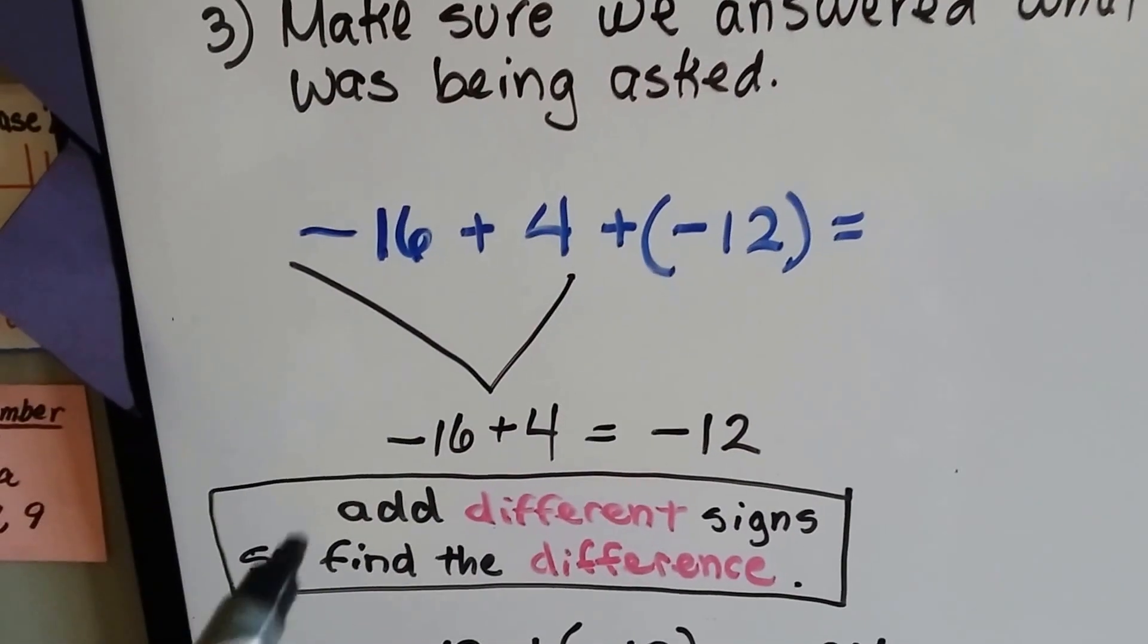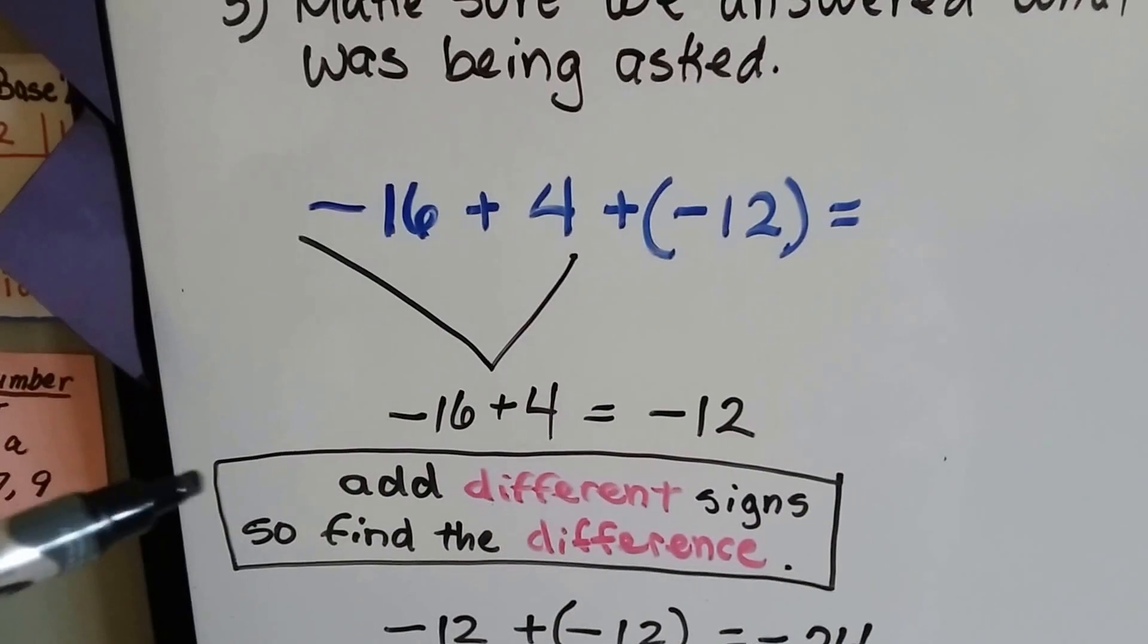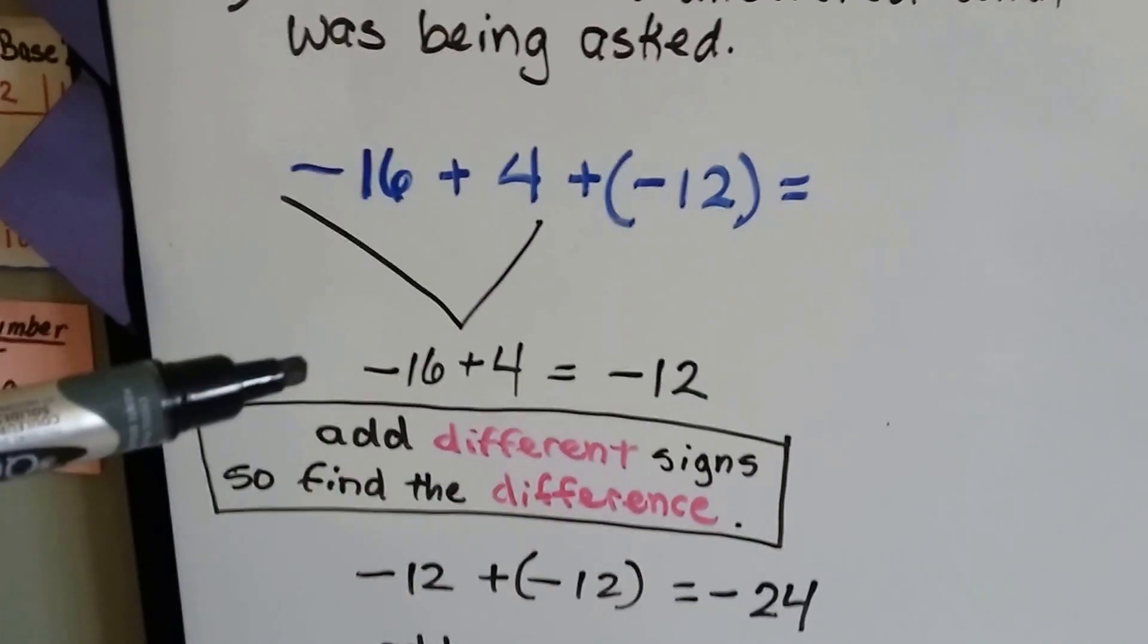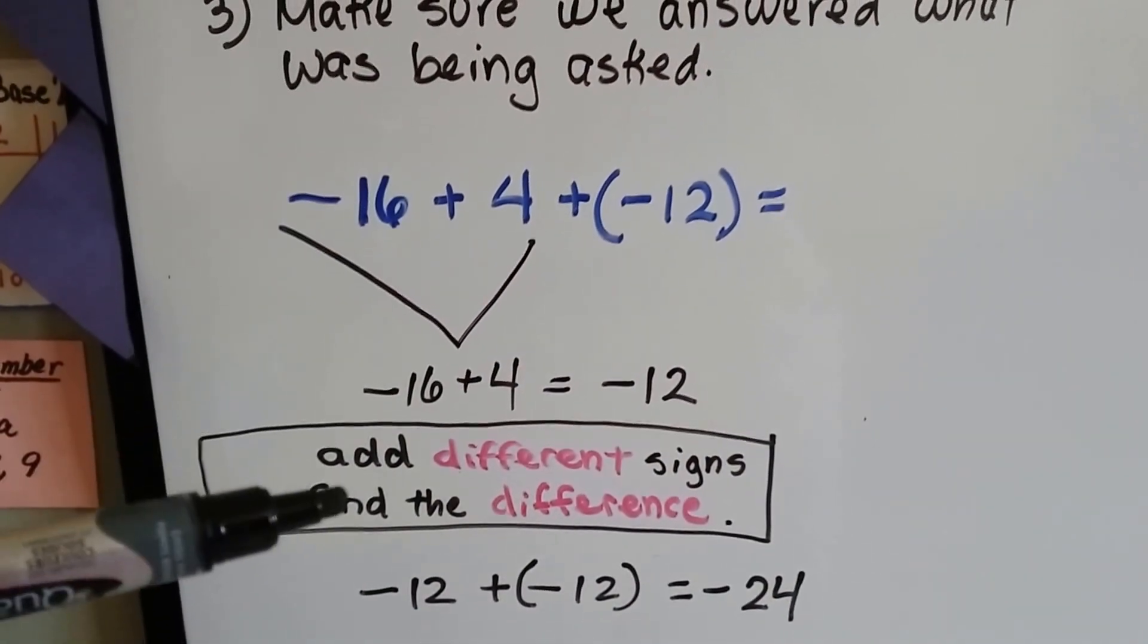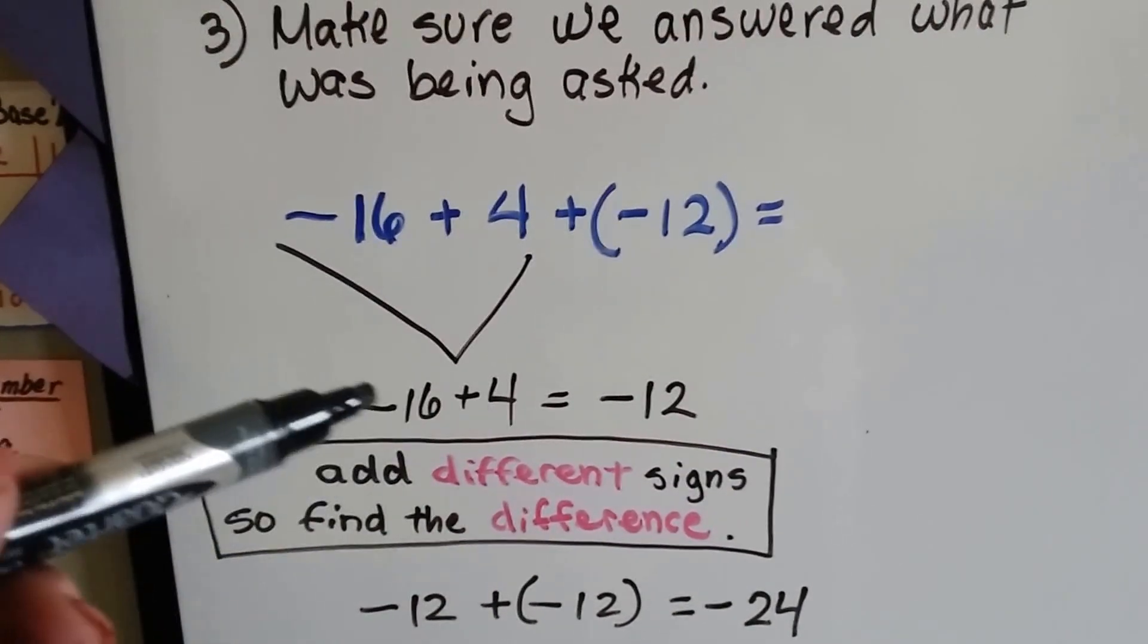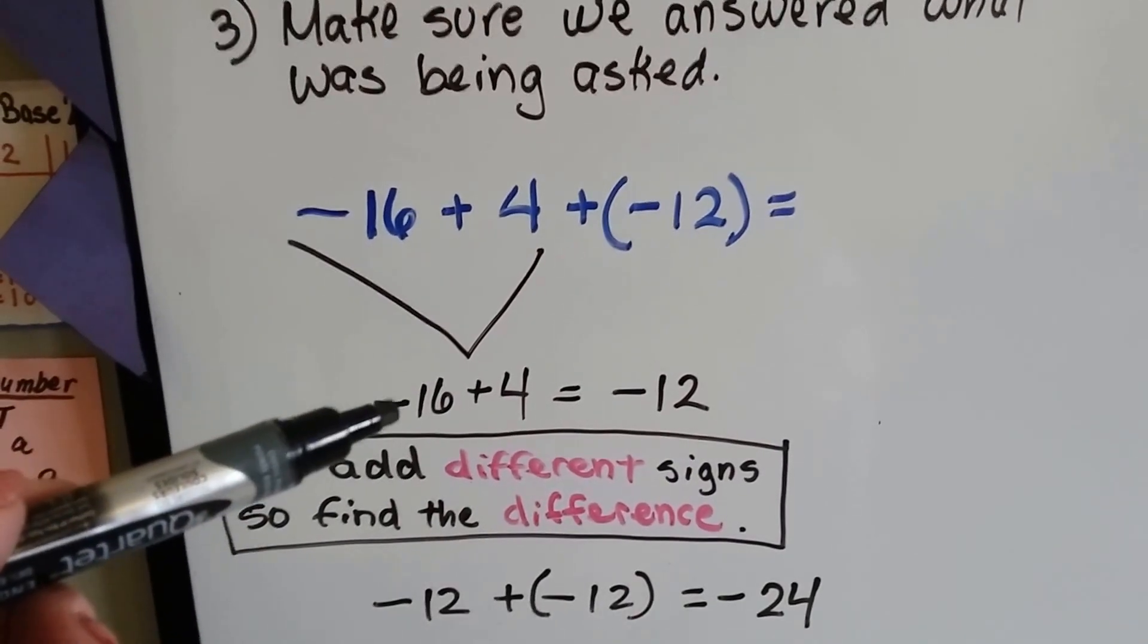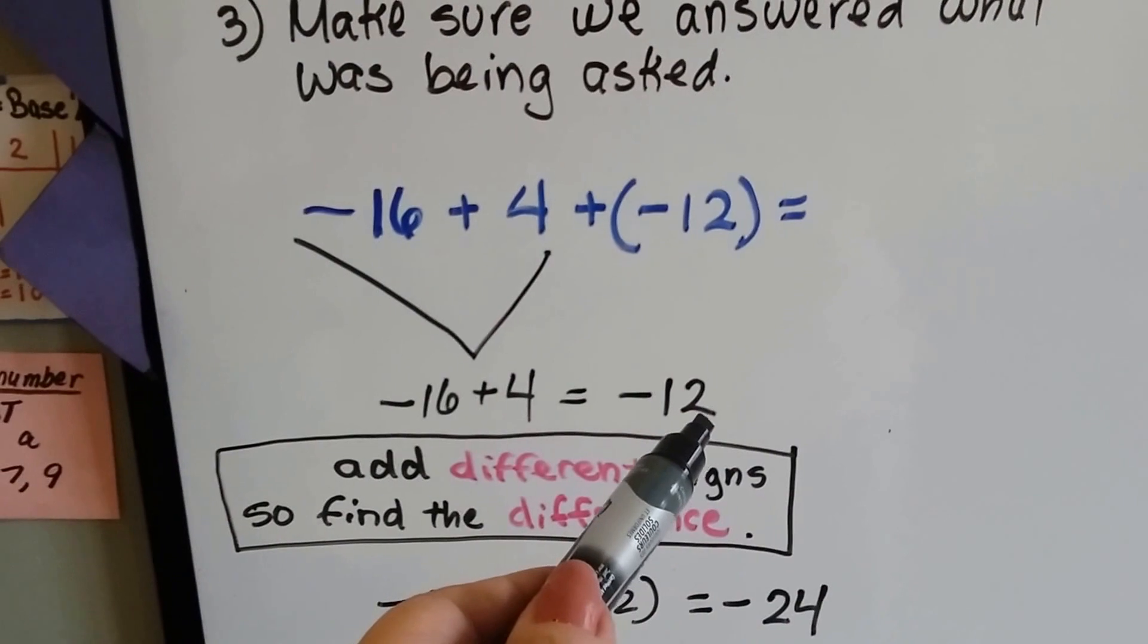I'm going to follow our rules. We have a negative 16 and a positive 4, and remember what the rule is? We add different signs, so we find the difference. So because this is a negative and that's a positive, and we're adding, and the signs are different, we're going to find the difference. Different signs, difference, see?